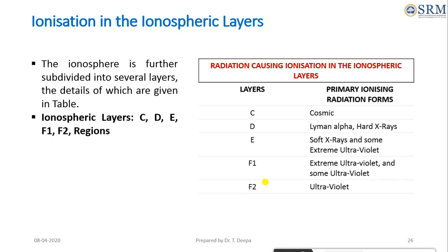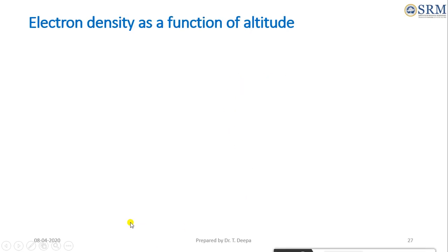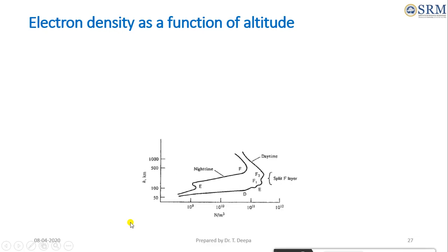Within the ionosphere there are different regions which affect the propagation of radio signals in different ways: the D layer, E layer, and F layer, with the F layer splitting into F1 and F2 layers — all affecting radio signals differently. A summary of the forms of radiation causing ionization in the ionosphere layers is given in a table.